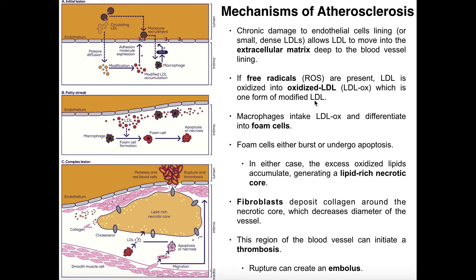Looking at this picture, we've got circulating LDL, and if it's small and dense, it can actually move into the extracellular matrix through the blood vessel lining. In there, those free radicals are going to modify that LDL into oxidized LDL. This is a misconception that most people have — this process actually occurs in the extracellular matrix, not so much in the blood vessel lumen.